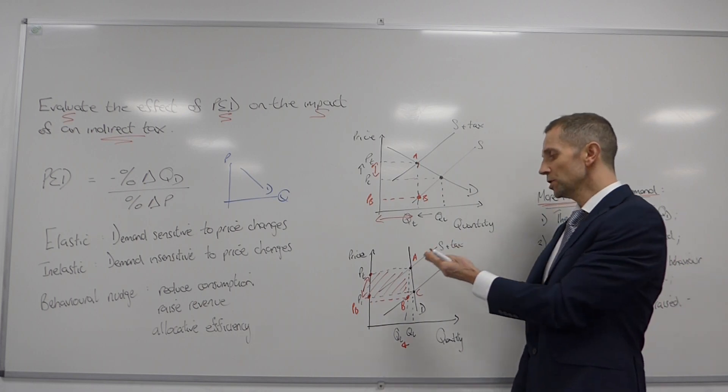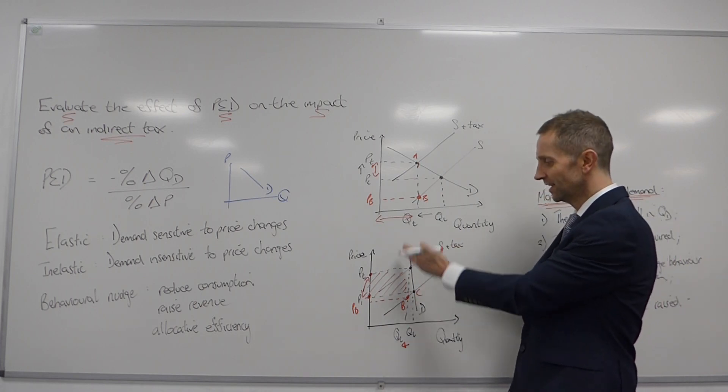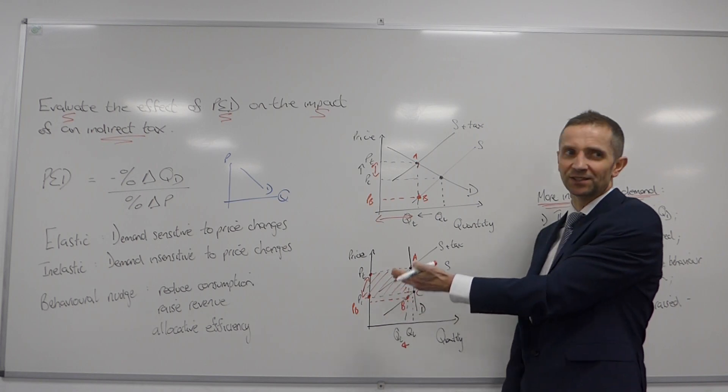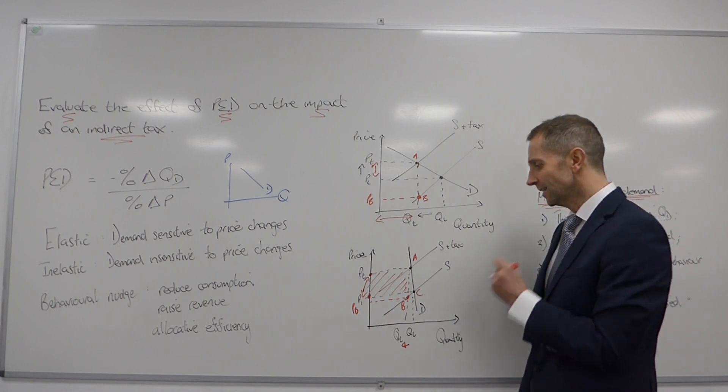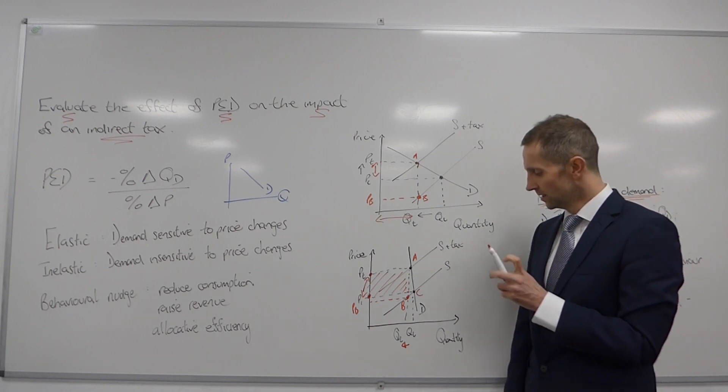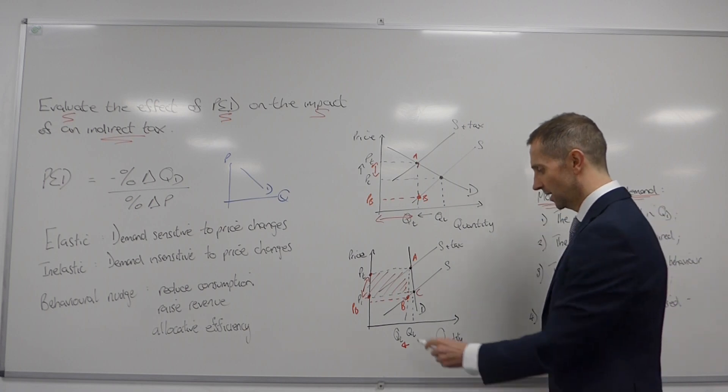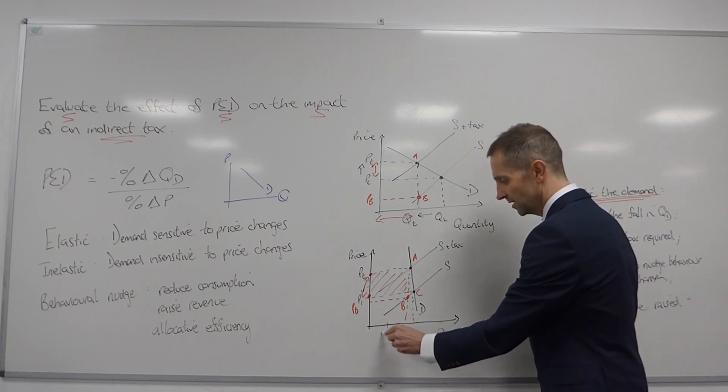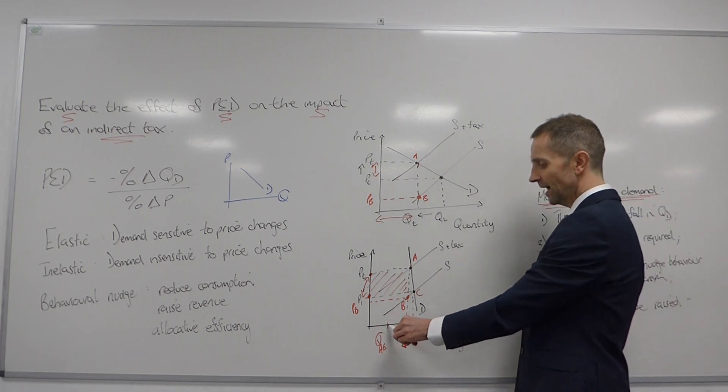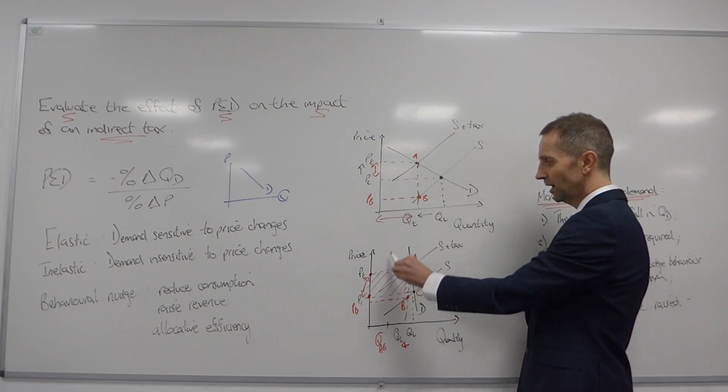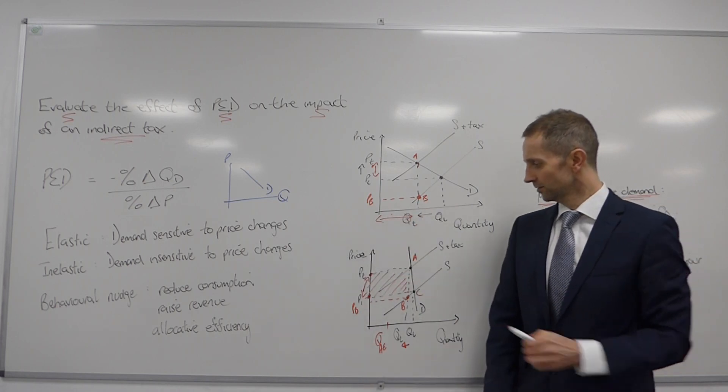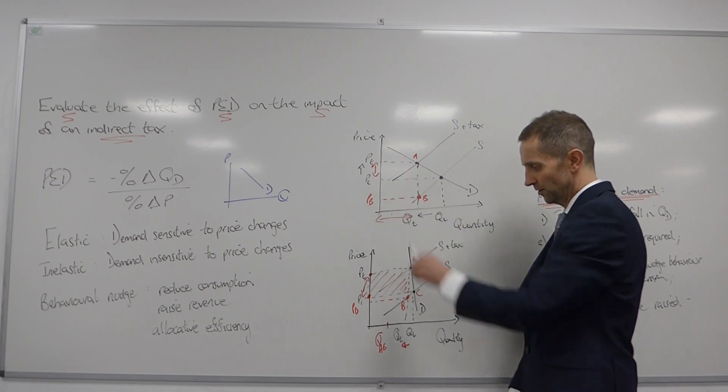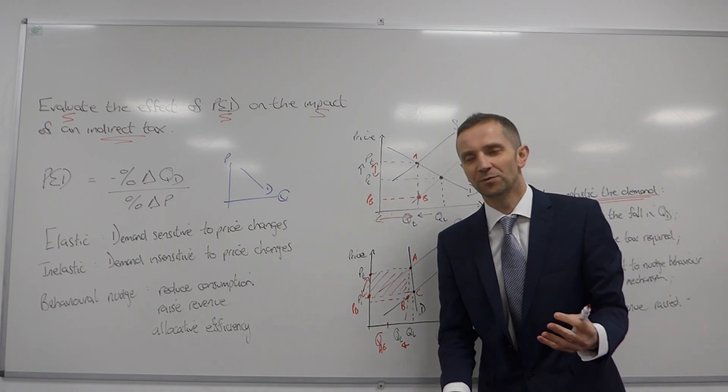So, it would appear, ladies and gentlemen, would it not, that the tax, in this instance, if its sole purpose is to reduce consumption, to maybe try to move it to a more allocatively efficient level, well, it's not working. Because if, let's say, this quantity here was the AE, the allocatively efficient level, well, to get anywhere near here, you would have to be introducing a tax which shifted supply almost up to here. So, the tax would have to be enormous.